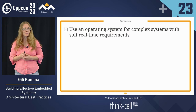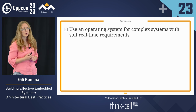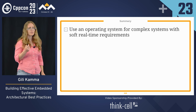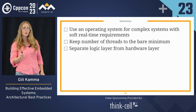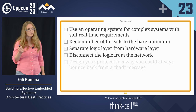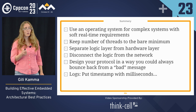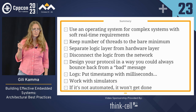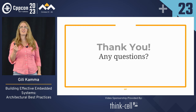We are at the end of the talk. Summary: use an operating system for complex systems with soft real-time requirements. Keep the number of threads to the bare minimum. Separate the logic layer from the hardware layer. Disconnect the logic from the network. Design your protocol in a way you could always bounce back from a bad message. For logs, put timestamps with milliseconds. Work with simulators. And if it's not automated, it won't get done. Thank you very much. Any questions?